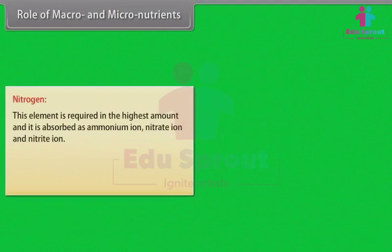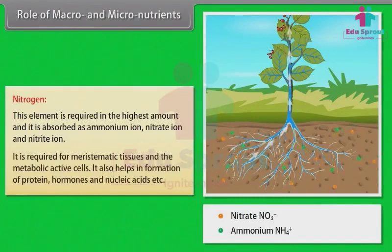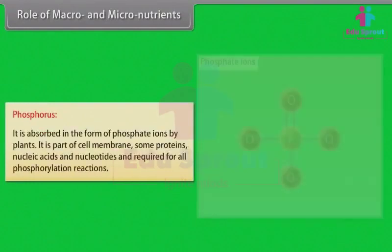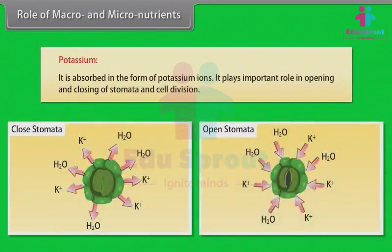Nitrogen: this element is required in the highest amount and is absorbed as ammonium ions, nitrate ions, and nitrite ions. It is required for meristematic tissues and metabolically active cells. It also helps in the formation of proteins, hormones, and nucleic acids. Phosphorus: absorbed in the form of phosphate ions; it is part of cell membranes, some proteins, nucleic acids, and nucleotides, and is required for all phosphorylation reactions. Potassium: absorbed as potassium ions; it plays an important role in opening and closing of stomata and cell division.